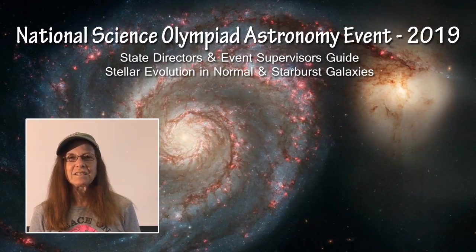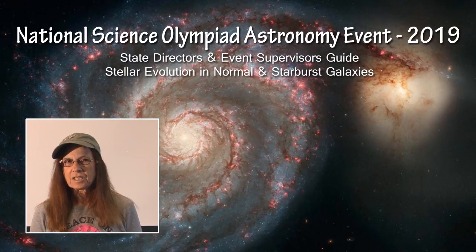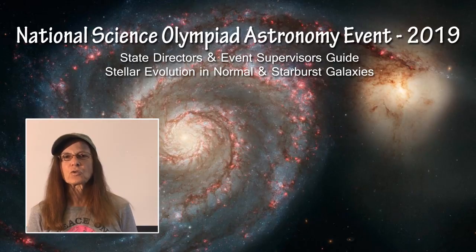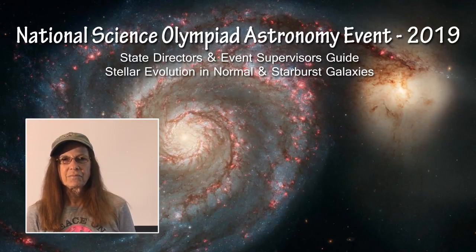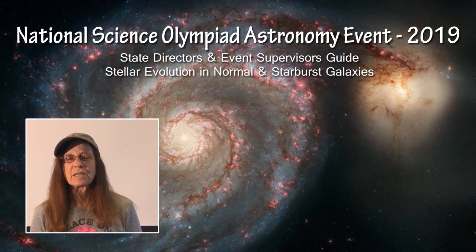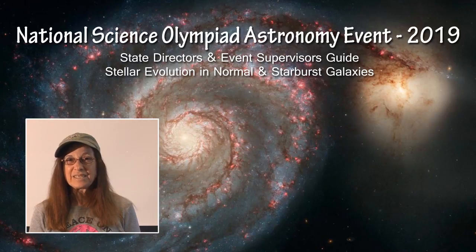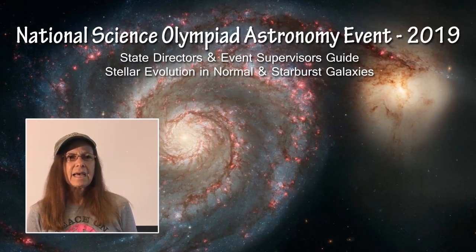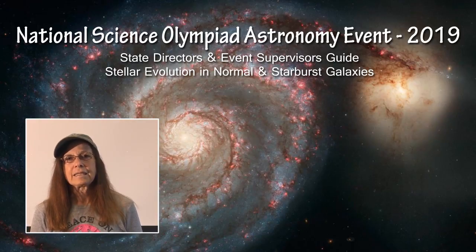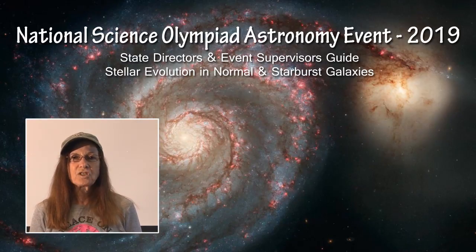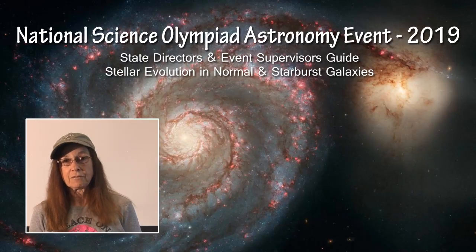I am Donna Young, as most of you know, and I have put this particular presentation together specifically for the event supervisors for the Astronomy 2019 competition year. It is also useful for state directors or any organizers of invitationals, regionals, or state competitions, or anybody involved in any of the astronomy competitions, because it is going to talk about logistics, rooms that are probably easier for the astronomy event to take place in, as well as the type of test to develop and how it should be developed, the resources that are available, and as we go along I will be discussing the JS9, which a lot of people are curious about and have a lot of questions about as they see the event description as it is written for 2019.